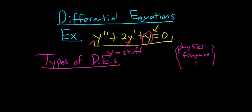The first type is called an ordinary differential equation. For example, dy/dx plus 3y equals e to the 6x. This is called an ordinary differential equation or ODE.